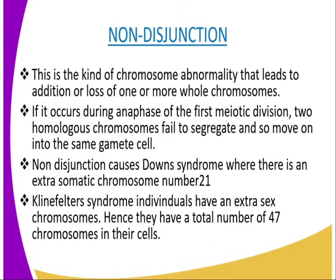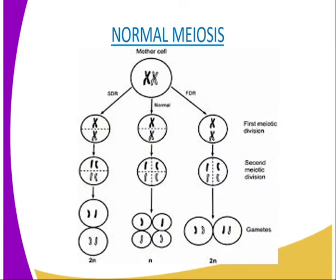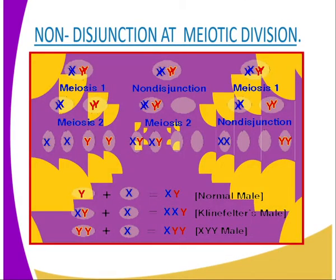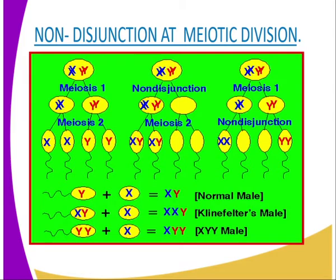We are going to explain non-disjunction, since this involves several activities which involve meiosis and also mitosis. We are also going to have some diagrammatic representation. Non-disjunction is the kind of chromosome abnormality that leads to addition or loss of one or more whole chromosomes. If it occurs during the anaphase of the first meiotic division — as we can see, that is the normal meiosis — two homologous chromosomes fail to segregate and so move into the same gamete cell, as you can see from our diagram.